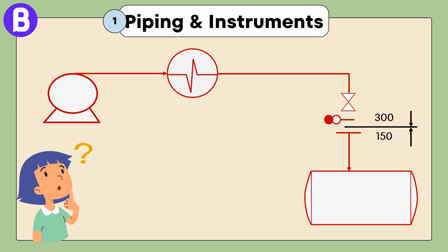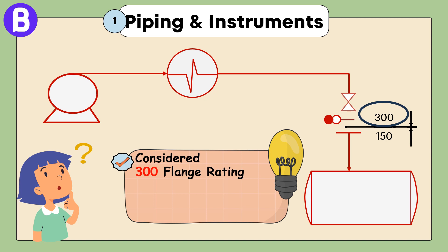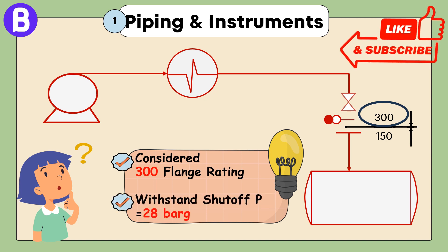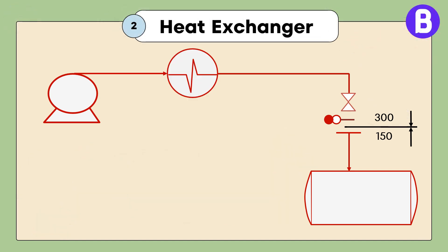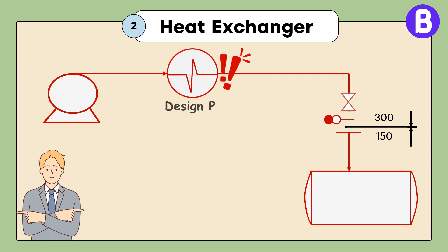For piping and instruments, they already considered a 300 flange rating, which can withstand the new 28 bar gauge shutoff pressure. But the real issue is with heat exchanger, as the design pressure of the exchanger was only 25 bar gauge.